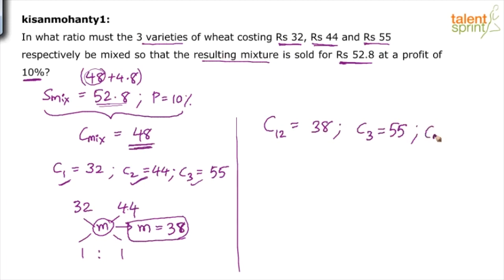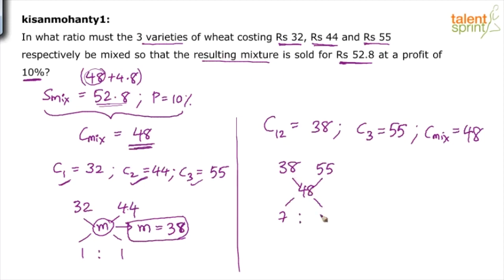Now the scenario reduces to two varieties: C12 (mixture of C1 and C2) costing ₹38, and C3 costing ₹55, to be mixed to get a mixture costing ₹48. Apply the allegation rule: difference of 55 from 48 is 7, and difference of 48 from 38 is 10. So C12 : C3 = 10 : 7.